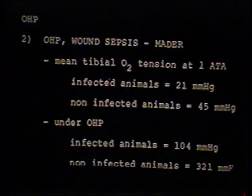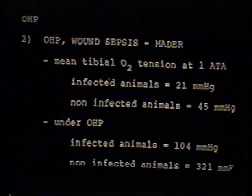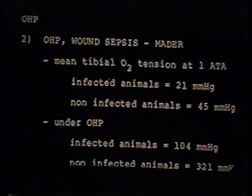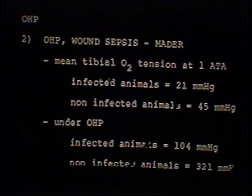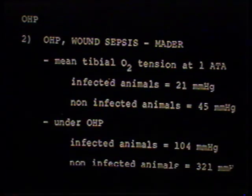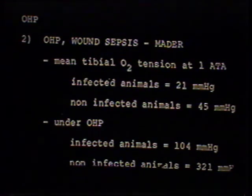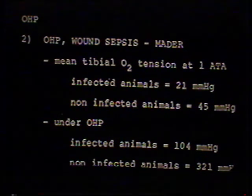The biggest problem in osteomyelitis is infection. The key question is: can we raise the level of oxygen in the osteomyelitic wound high enough to be meaningful? John Mader at Galveston has done basic studies using the rabbit model. At one atmosphere, infected animals had 21 mmHg partial pressure of oxygen in the area of infection, while non-infected animals had 45 mmHg. Under hyperbaric conditions, there was an immense change — we got to 104 mmHg in infected bone. Non-infected animals went to 321 mmHg. The infected animals had PO2s below 30 mmHg, indicating their white cells really weren't doing much of anything.